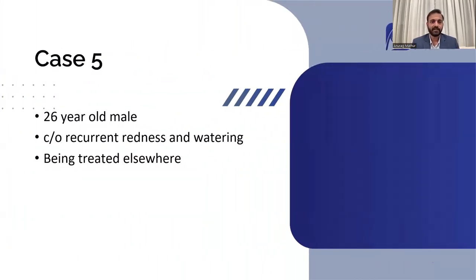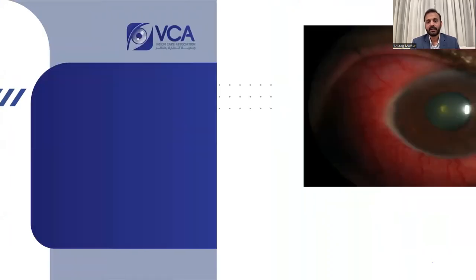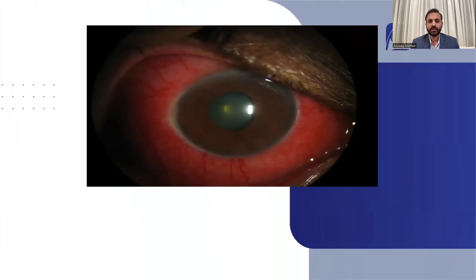Case number five: a 26-year-old male with recurrent redness and watering, being treated elsewhere with multiple eye drops — antibiotics, lubricants, and anti-allergics. When you look at this clinical picture, it looks like a perfect case of conjunctivitis. There is a lot of congestion, dilated blood vessels, and sometimes only a watery discharge.